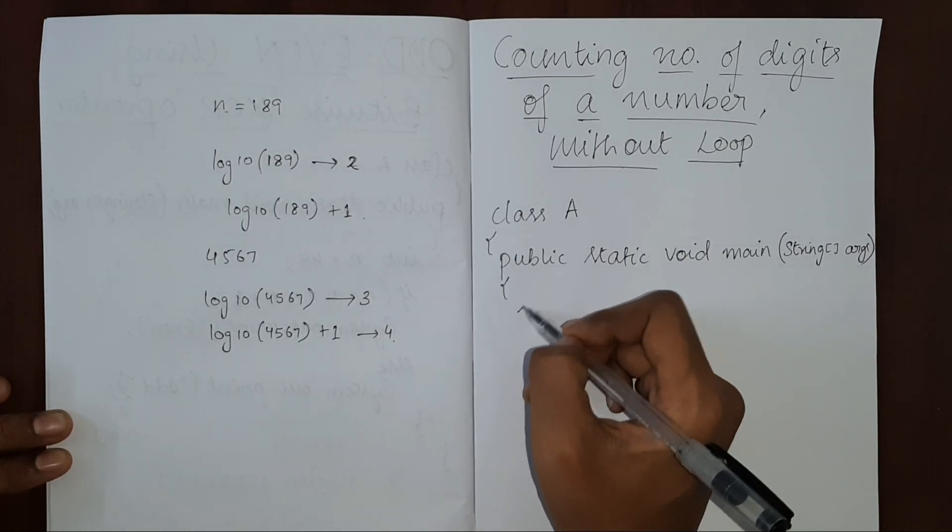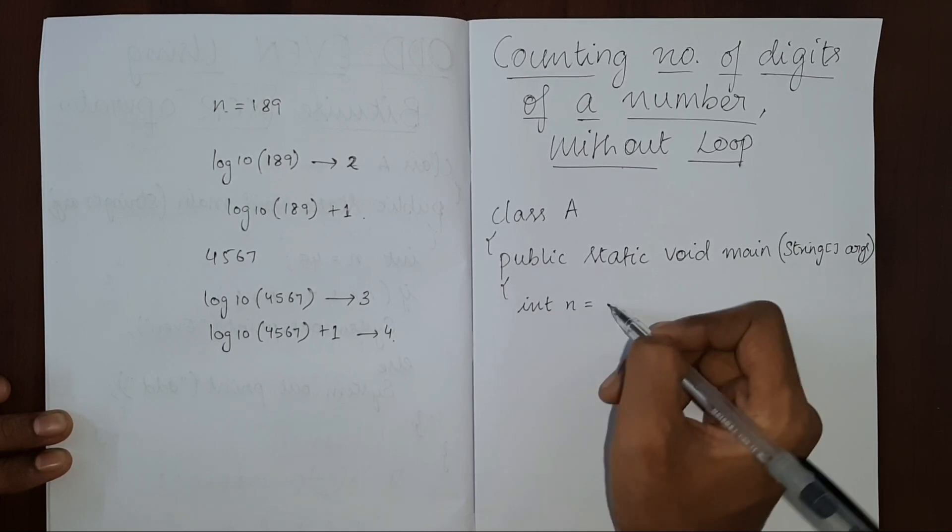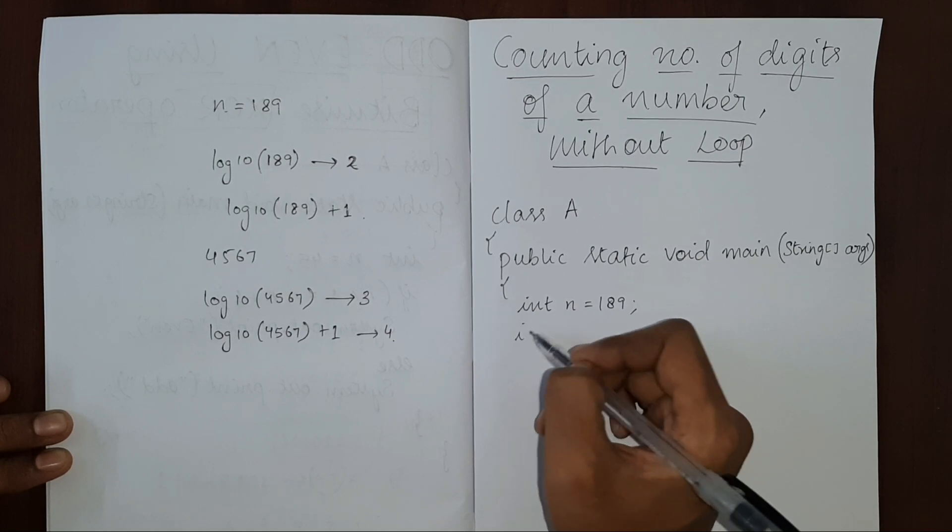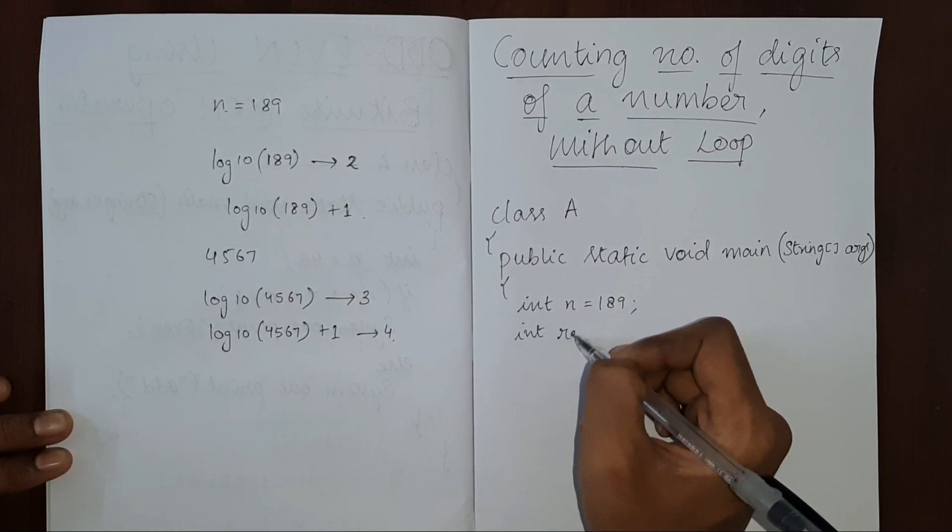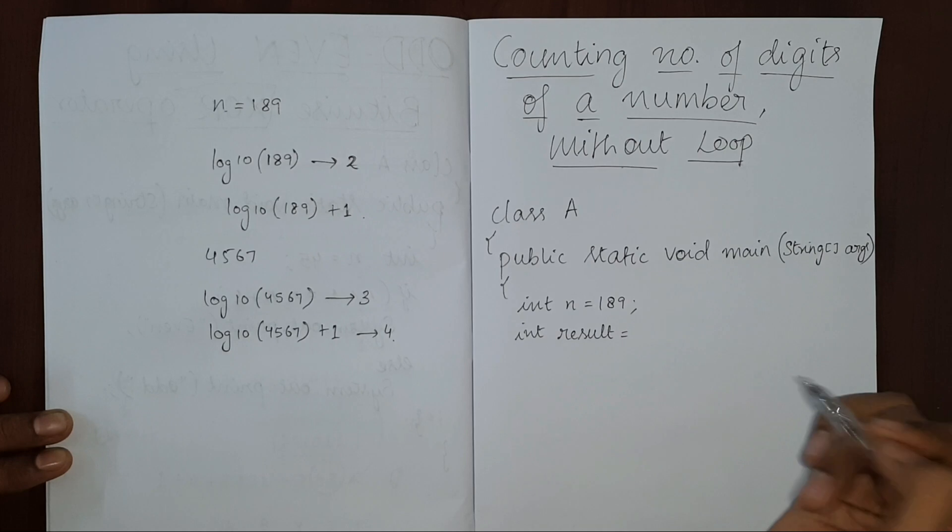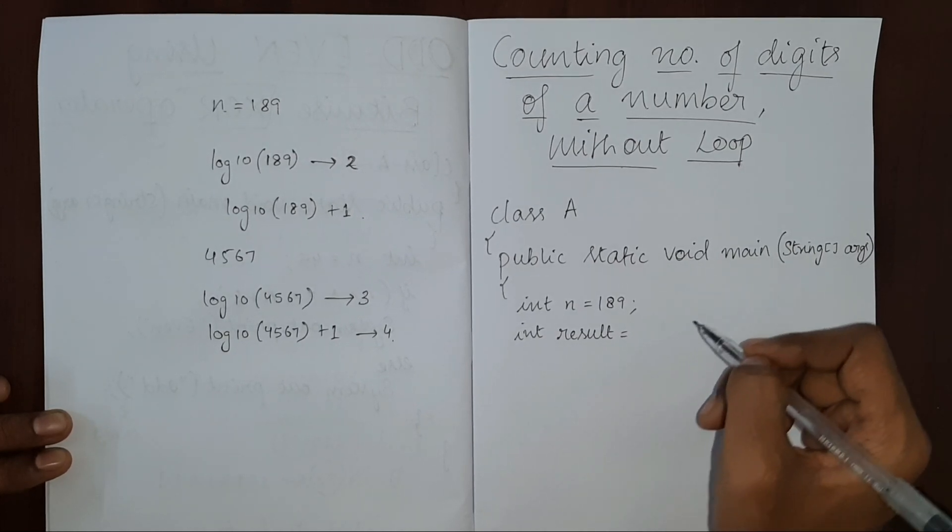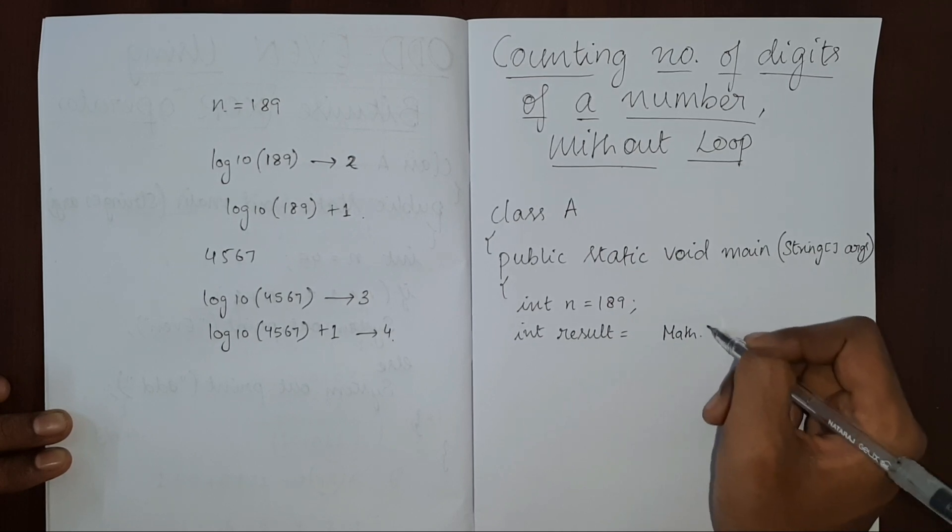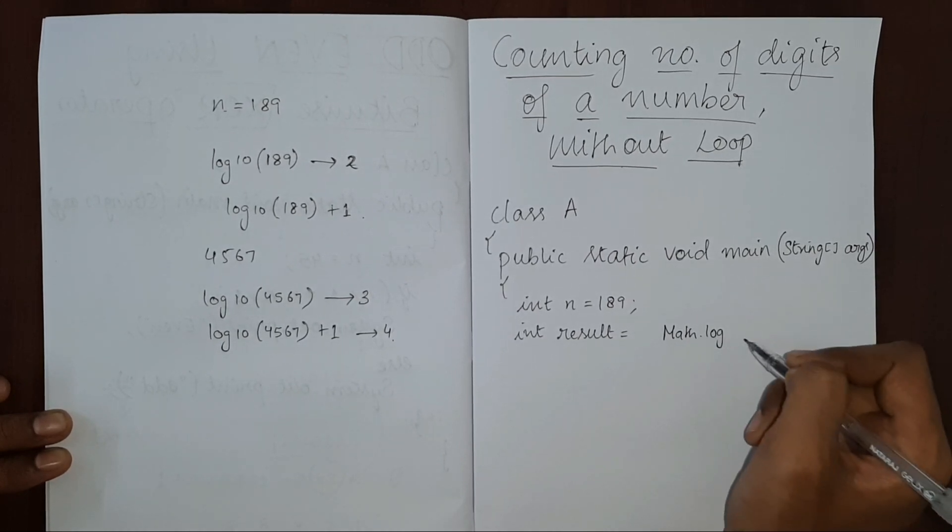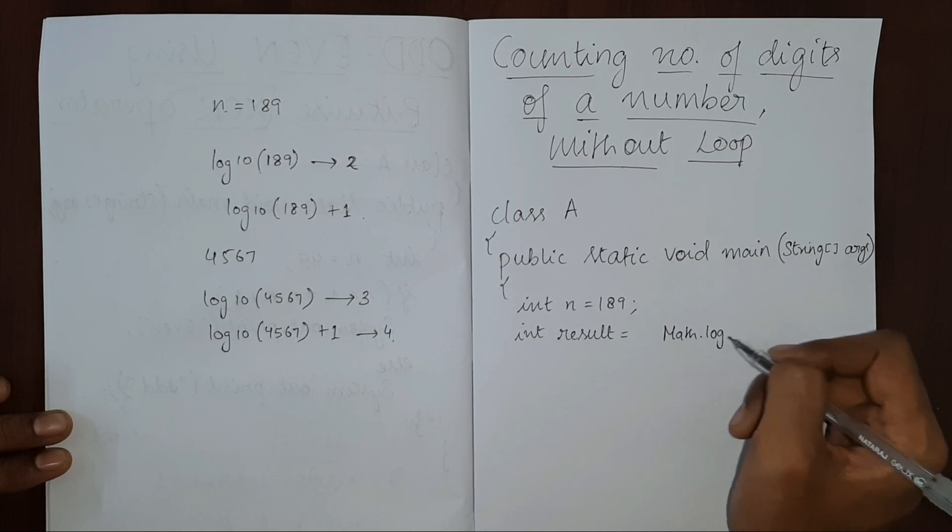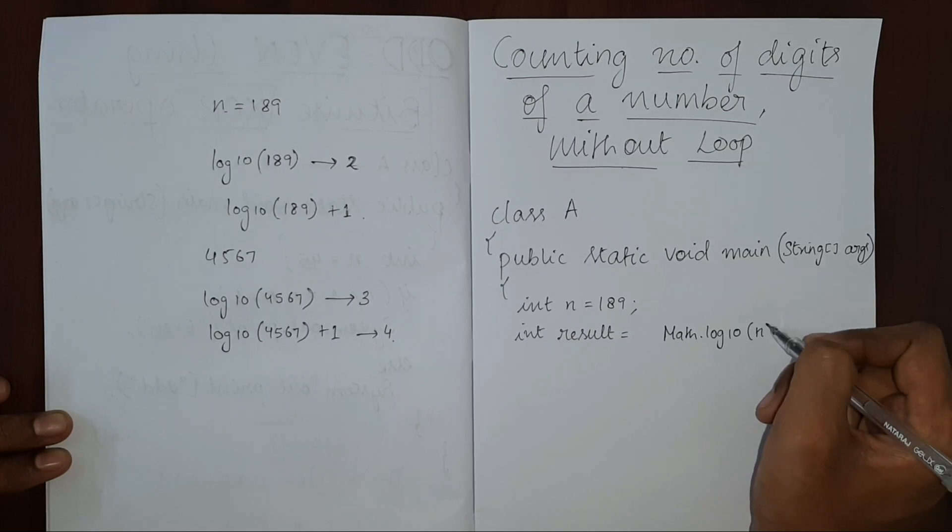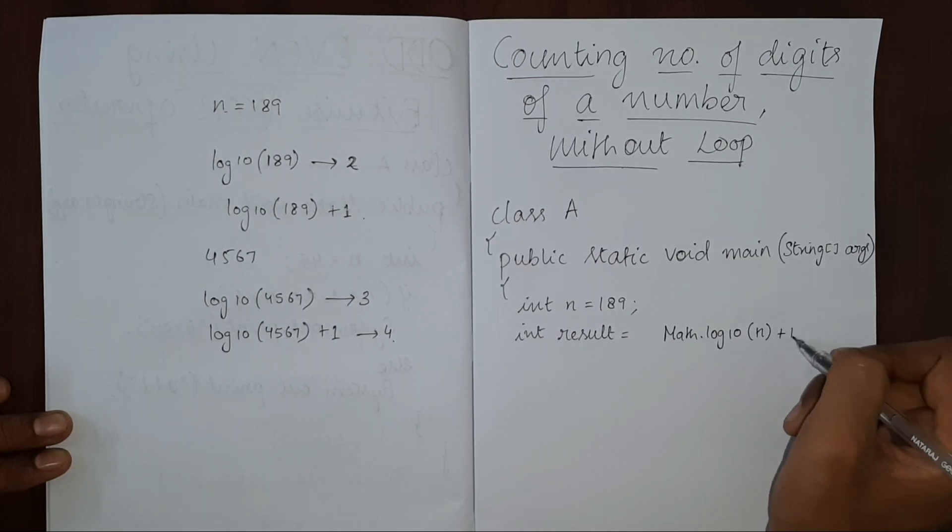So let's put this over here. Int n equal to any number. We'll create one more variable called result. And this log belongs to math. We have to use Math dot log base 10 of n then plus 1.